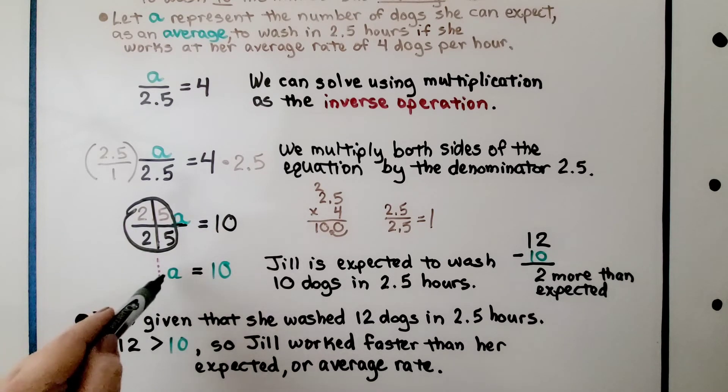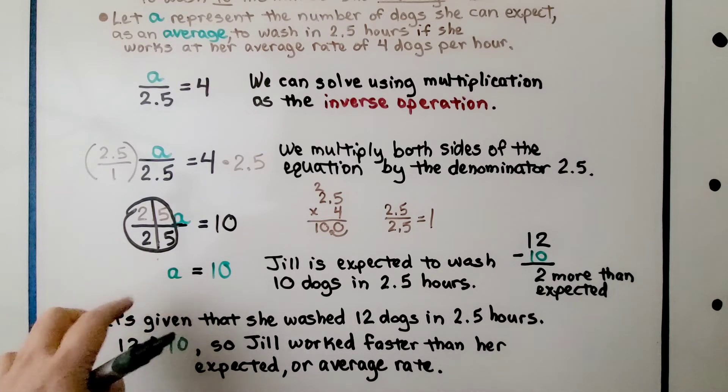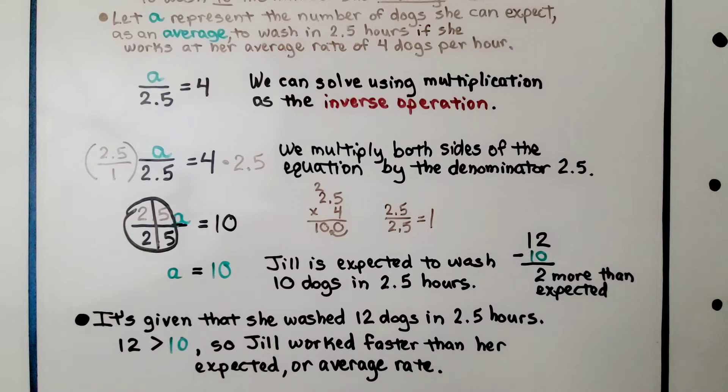That means 1A equals 10, but we don't write 1 as a coefficient. So A equals 10. Jill is expected to wash 10 dogs in 2.5 hours.